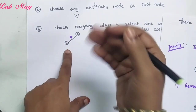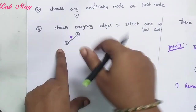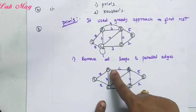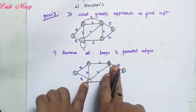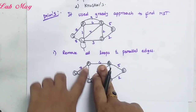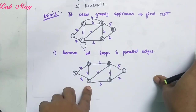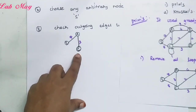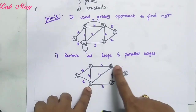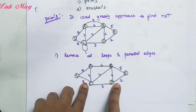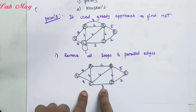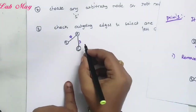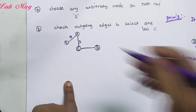Next, we check connections from A or from S. We already came from S to A, so now we look from A. From A, there are edges going to B (weight 6) and to C (weight 3). Among 6 and 3, the least weight is 3. So we take A to C with weight 3. Then from C, we check edges — to B (weight 4), to D (weight 3), and to S (weight 8). The minimum cost is 3, so we take C to D with weight 3.